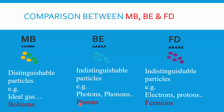Looking at examples: for Bose-Einstein statistics, examples include photons and phonons. For Fermi-Dirac statistics, examples include electrons and protons, among many others. For Maxwell-Boltzmann statistics, the example is molecules of an ideal gas.